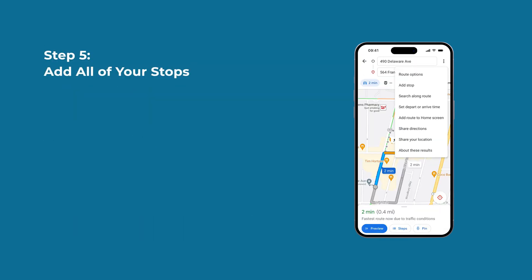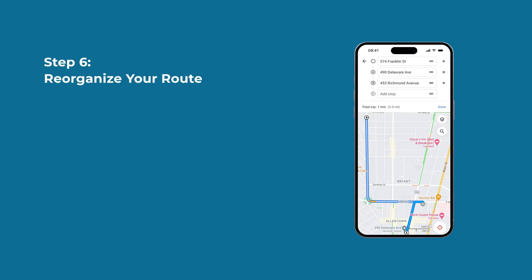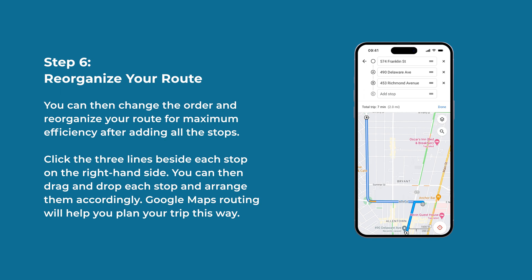Step 5: Add all of your stops. You can really get into how to plan a route in Google Maps here. Repeat step 4 for all the stops along your route. On the mobile app, you can do this by clicking on the three little dots beside the location — this will give you the option to add a stop. You can add up to nine stops between your starting location and final destination. Step 6: Reorganize your route. You can change the order and reorganize your route for maximum efficiency after adding all the stops. Click the three lines beside each stop on the right-hand side, then drag and drop each stop to arrange them accordingly.